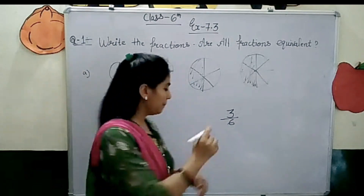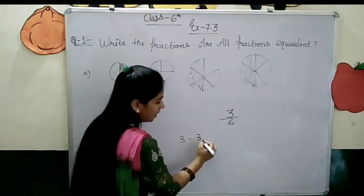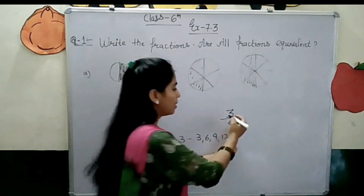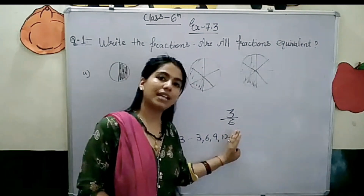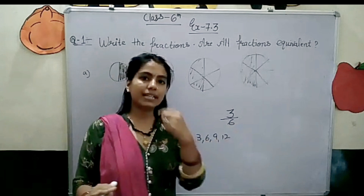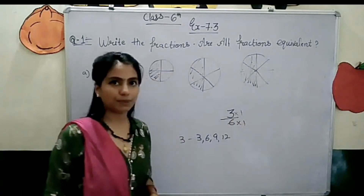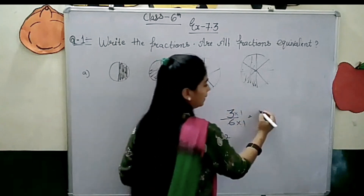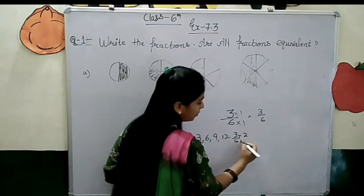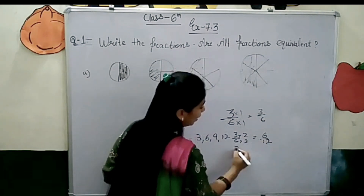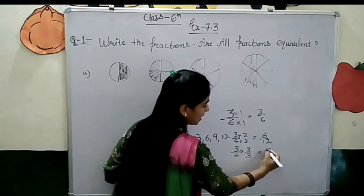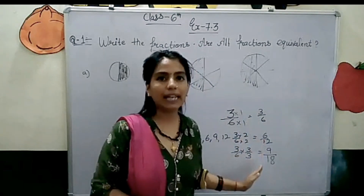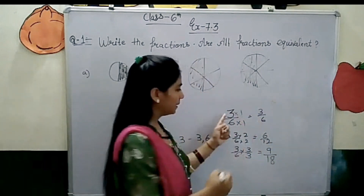Everybody knows multiples? Multiples of 3 are 3, 6, 9, 12 — the 3 times table. In the same manner, for equivalent fractions, we will multiply and divide both the numerator and denominator with the same number. So, 3 by 6 multiplied by 1 is 3 by 6; multiplied by 2 gives 6 by 12; multiplied by 3 gives 9 by 18.